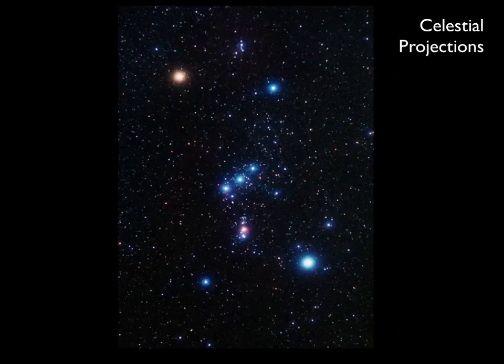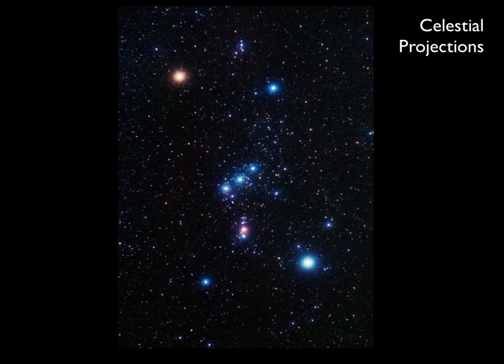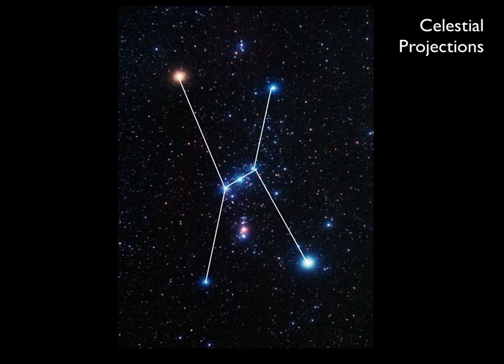The other important thing to remember with asterisms is that these familiar patterns, Orion's belt, the Big Dipper, etc., are celestial projections, and there is often no physical association between these stars. Sometimes the true three-dimensional distances between stars can be very great, but it's only in two dimensions that they appear close to each other.